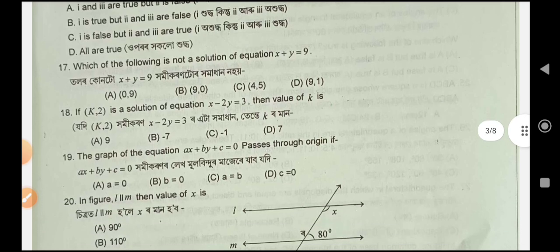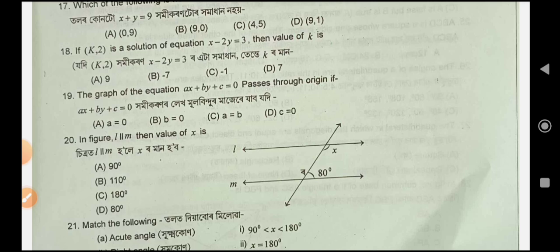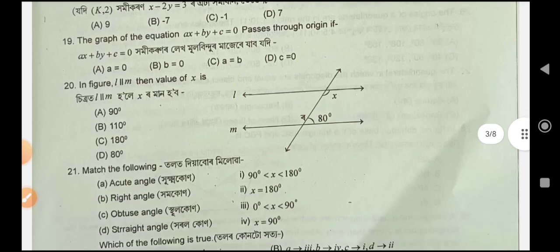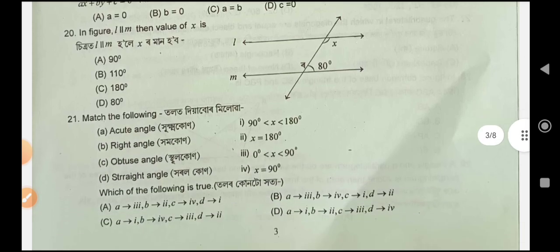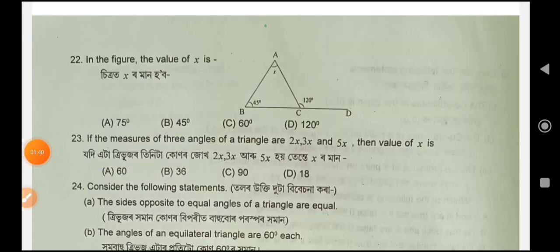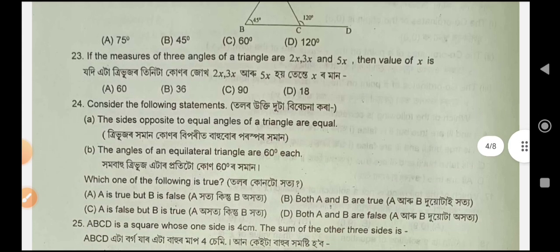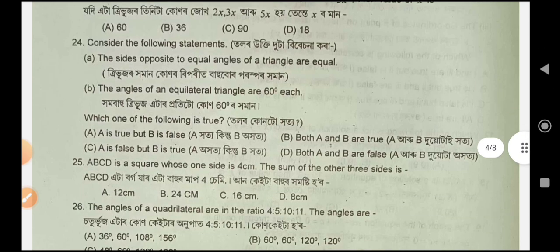Question number 19: option C. Question number 20: option B. Question number 22: option A. Question 23: option D. Question 24: option B. Question 25: option A.